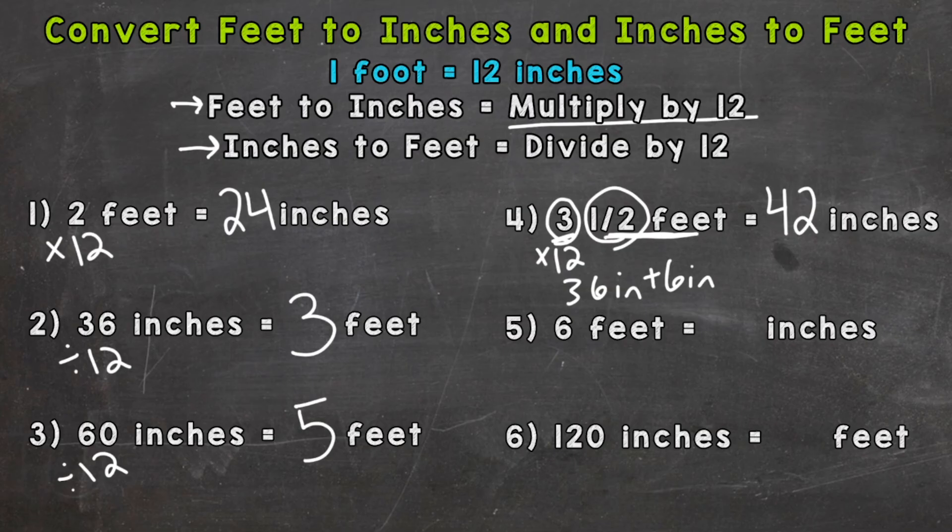Number five. Six feet equals how many inches? Well we have six groups of 12. We need to multiply 6 times 12 which that is 72 inches.